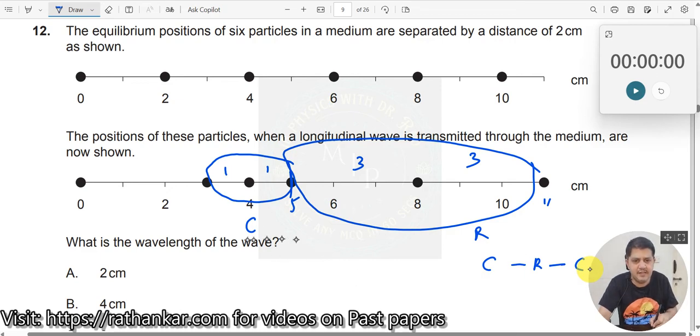Therefore, now what do we see here? We have between C and R over here, which means it is half a wavelength here. From where to where? From the center of the compression to the center of the rarefaction. Between this point and this point is nothing but lambda by 2, half a wavelength.